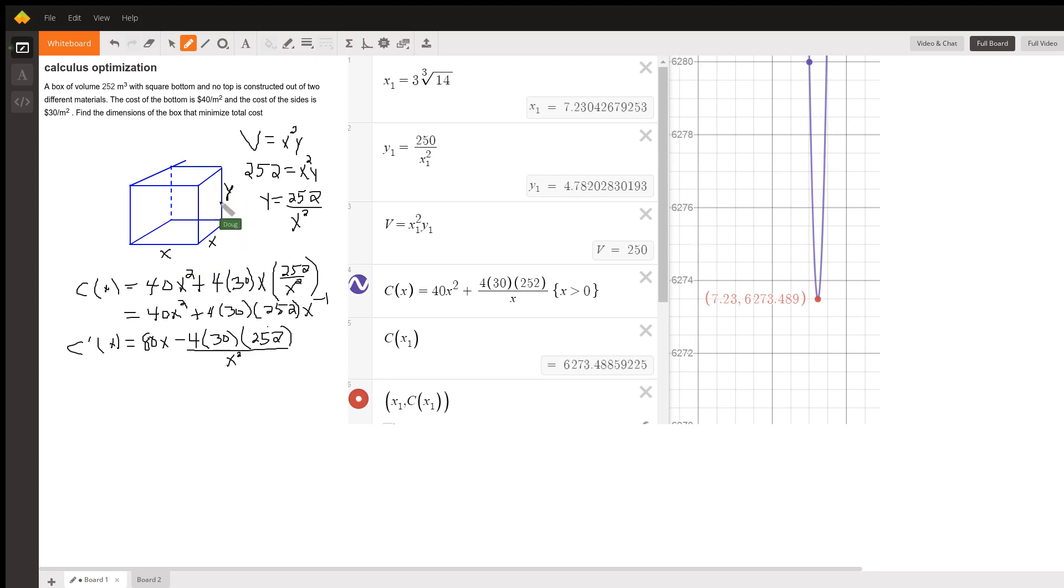Y could be the height of the box, and so the volume of the box would be x times x times y, length times width times height, and the reason that they give us this information that the volume is 252 meters cubed is so that we can find y in terms of x.